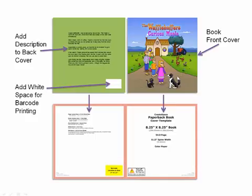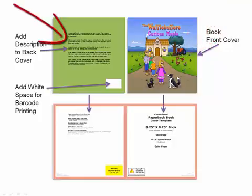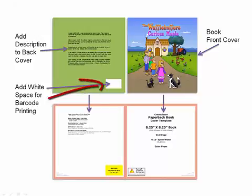I've selected a 32-page picture book and as you can see there's no need for a spine. I have the front cover of my book, I have the back cover with a description, and make sure you leave a white space because that is where CreateSpace will print the ISBN number.